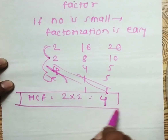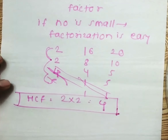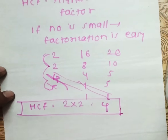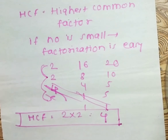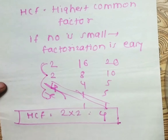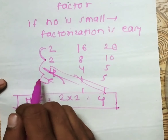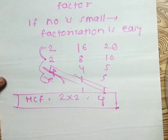As simple as that — in HCF we only take the common factors. That is why it is called the Highest Common Factor. In LCM, however, we take the common factors and also multiply by the uncommon factors — in this case, by 4 and by 5 as well.